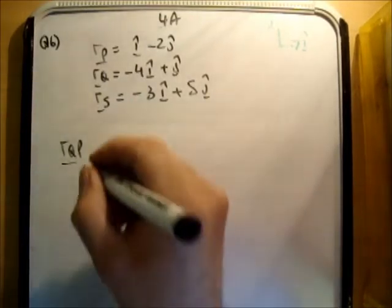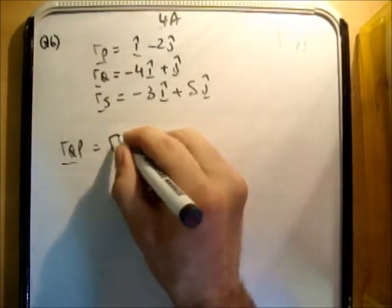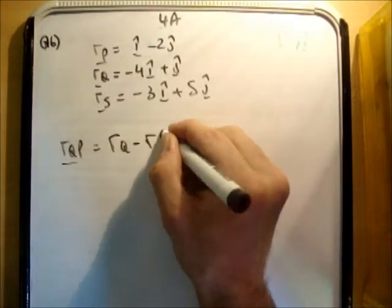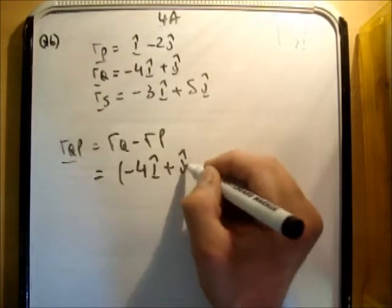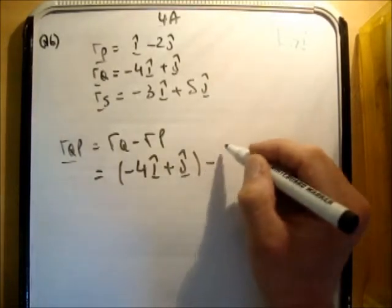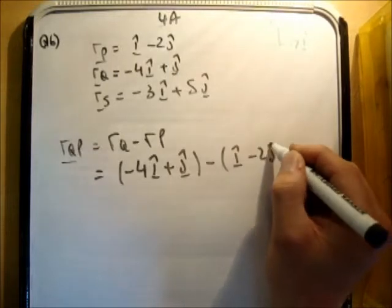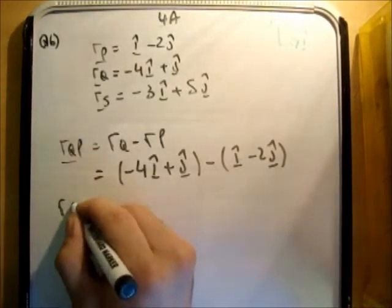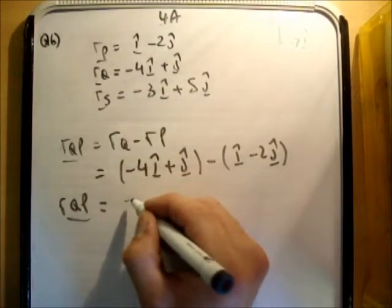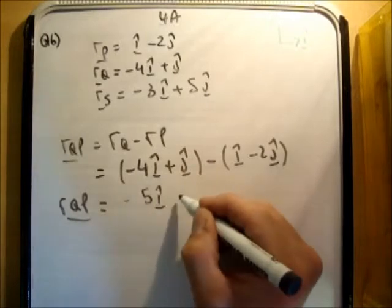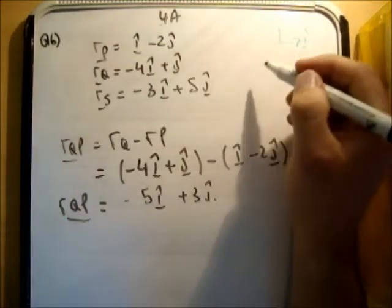So RQP is equal to RQ minus RP, so we're going to get negative 4 I hat plus J hat, minus RP, which is I hat minus 2 J hat. Therefore RQP is equal to negative 5 I hat plus 3 J hat. So I'm just going to note that over here.